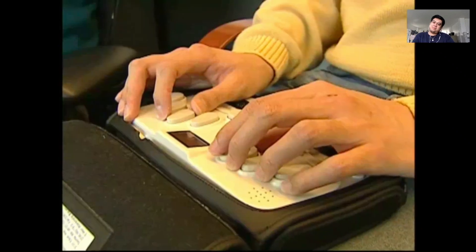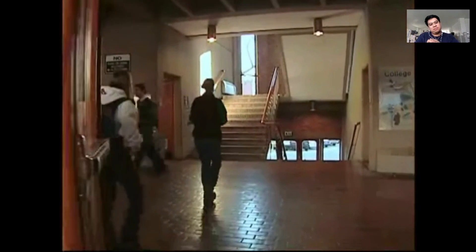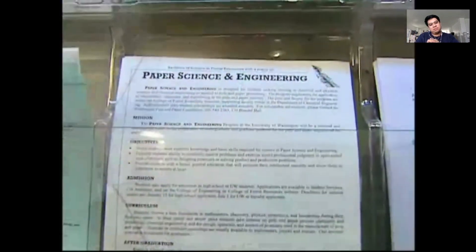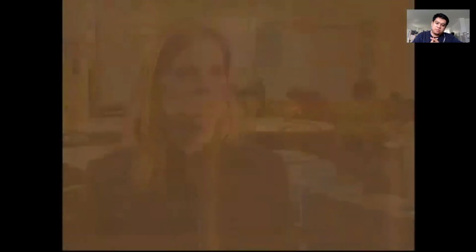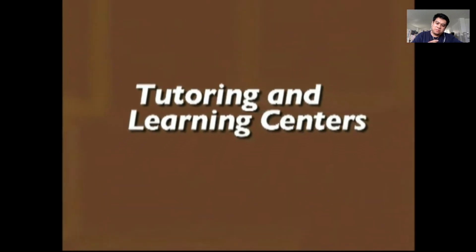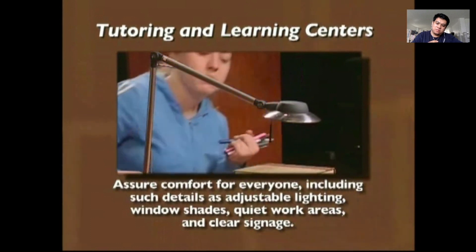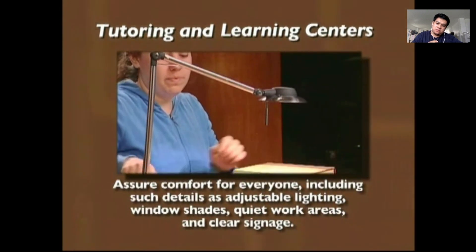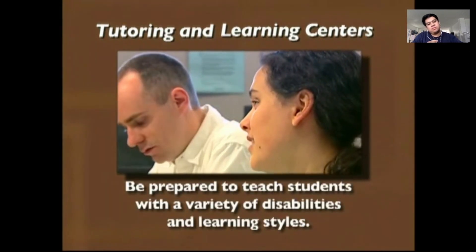Merle acknowledges: 'Although it might take extra time to create materials through universal design, once it's done, planning and execution time will be minimal in the future.' Outside the classroom, universal design can be applied to tutoring and learning centers. Make sure students can get to your facility and maneuver within it. Assure comfort for everyone including adjustable lighting, window shades, quiet work areas, and clear signage. Be prepared to teach students with a variety of disabilities and learning styles.